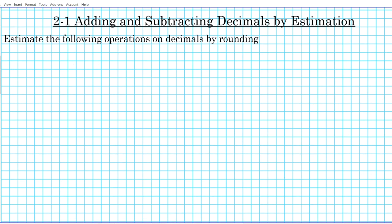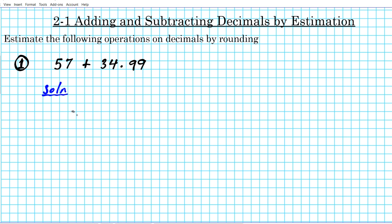So the instructions are as follows: we are to estimate the following operations on decimals by rounding. So let's take a look at question number one. Let's say we want to find the sum of 57 plus 34.99 by rounding. What is the sum going to be? There are other methods for estimating sums, but we're going to use the rounding method for this example.